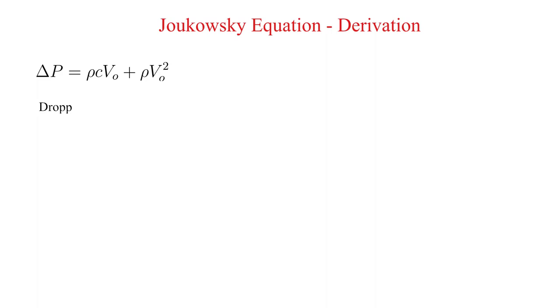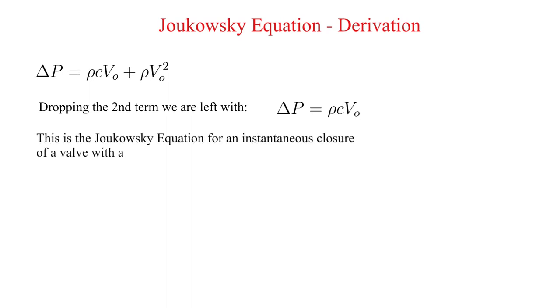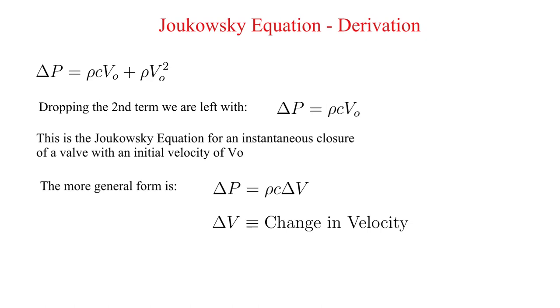Dropping the second term we are left with delta P is equal to rho times the celerity times V0. This is the Joukowsky equation for an instantaneous closure of a valve with an initial velocity of V0. More general form is delta P is equal to rho times the celerity times delta V where delta V is the change in velocity.